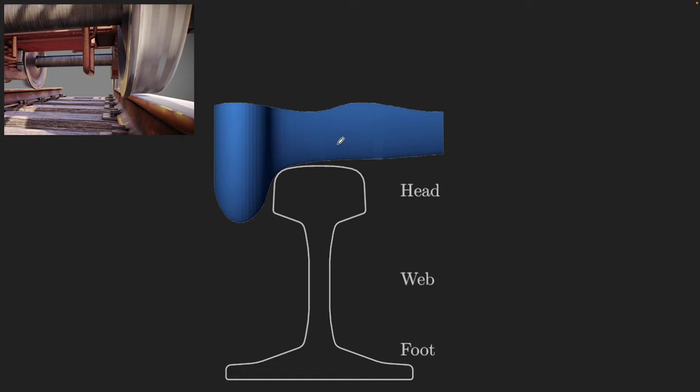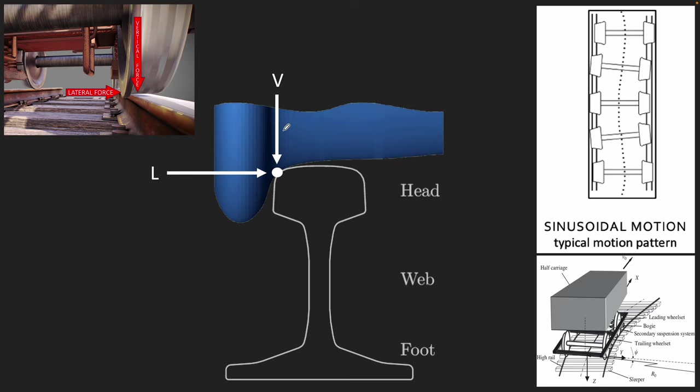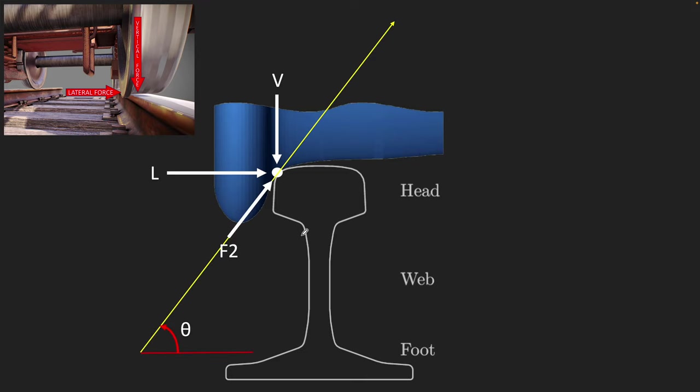We'll just derive it now. This is the cross section of a wheel on a rail. The very first force that we want to look at are the vertical forces, which the wheel exerts on the rail. You can also say it is due to the weight of the train. Then the second one is the lateral force, which is due to the sinusoidal motion or due to the curving of the train, which is pushing the wheel outwards.